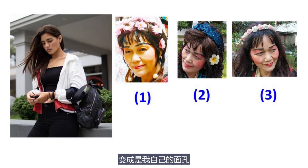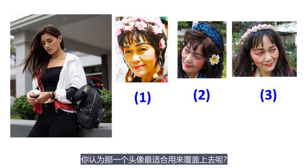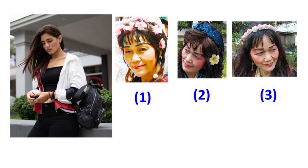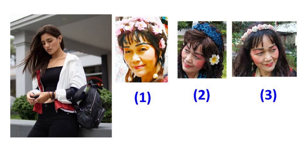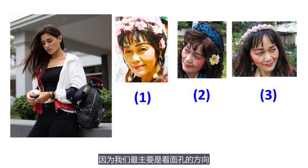让我们先来看看怎样去决定面孔的方向。我这里有一张模特儿的图片，整张模特儿图片都是一个背景涂层。右手边有三个头像，全都是我自己的面孔，而我要把我的头像覆盖上去背景涂层，把模特儿的面孔遮盖，变成是我自己的面孔。你认为哪一个头像最适合用来覆盖上去呢？毫无疑问，第一个头像是最适合的，因为我们最主要是看面孔的方向来决定哪一个头像最适合。